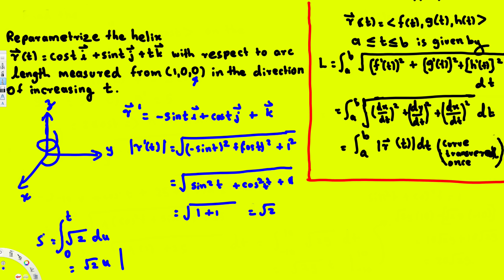Evaluating the integral from 0 to t gives us √2·t minus √2·0, which is just zero, so the final answer for the arc length is s = √2·t.